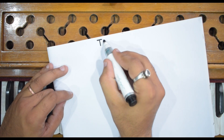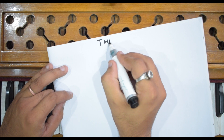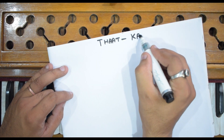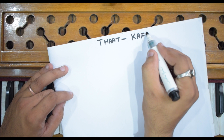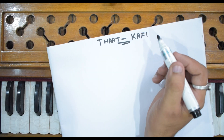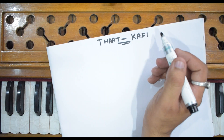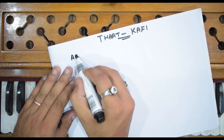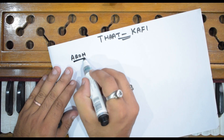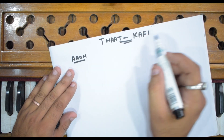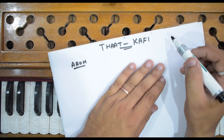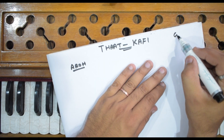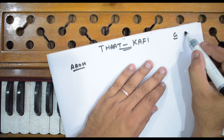So first, we will get to know Thaat Kafi. Thaat Kafi is a very popular Thaat and you will find a lot of raags in it. The main characteristics of this Thaat are that Ga is Komal and Ni is Komal.